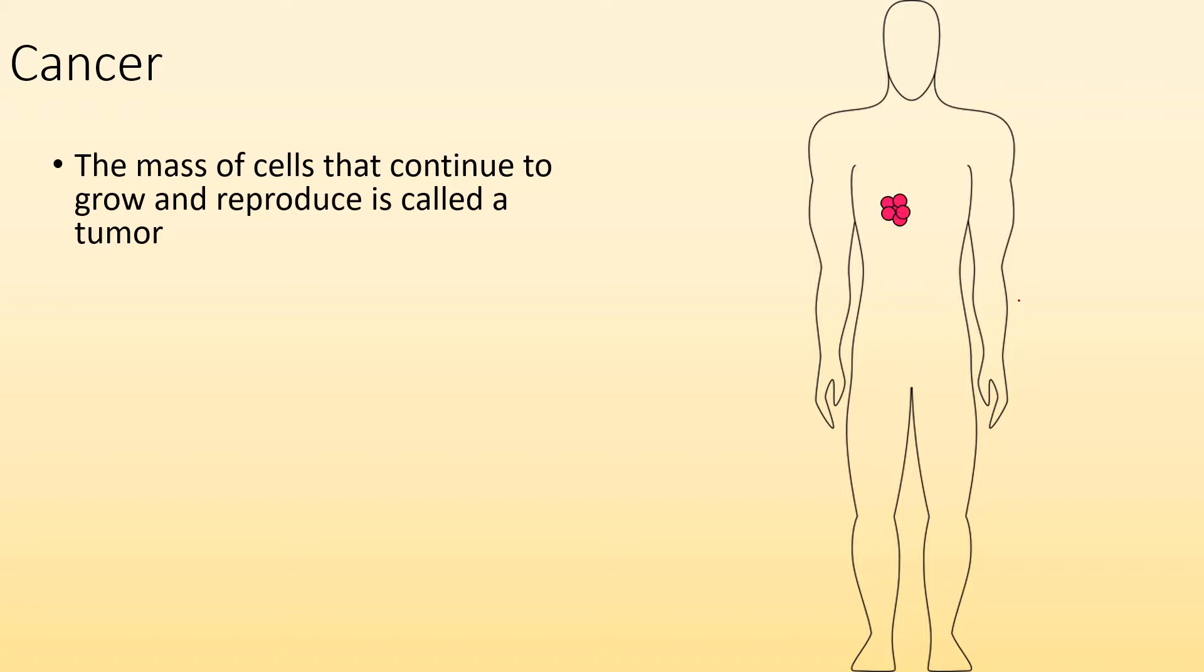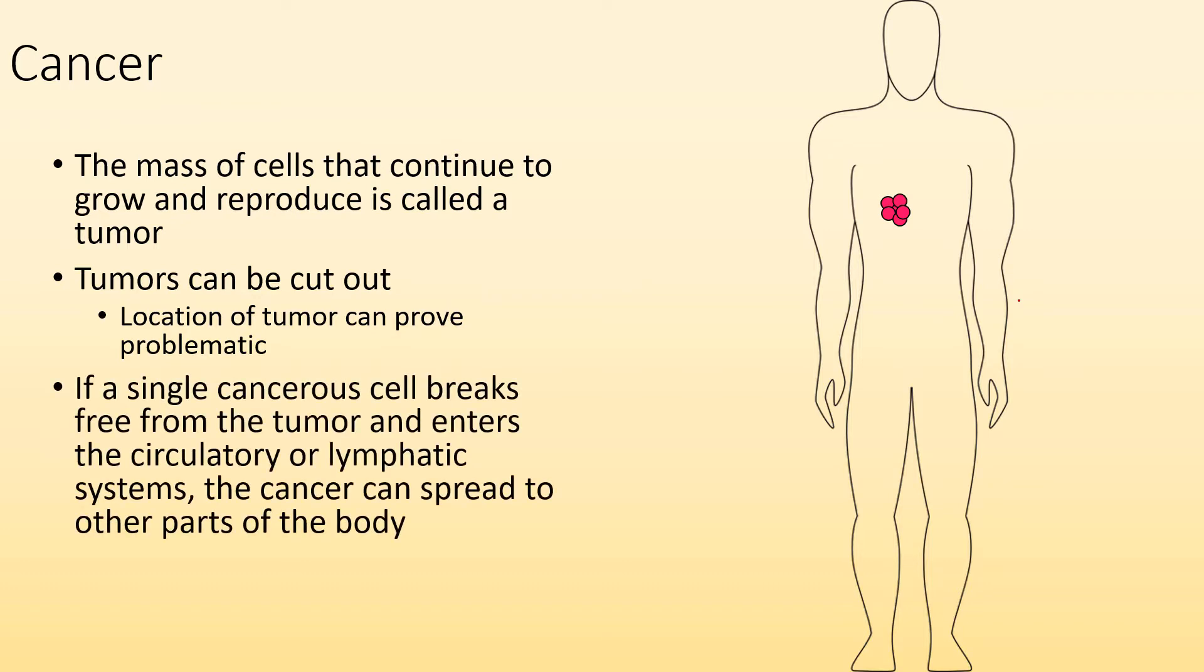So let's say we had a tumor forming here. Tumors can be cut out. That's one treatment. If you have a cancerous tumor, you can cut it out and then it's gone. But that can be problematic depending on where the tumor is. If it's somewhere that's easily accessible, surgery may not be as complicated as if it was, let's say, like a brain tumor or something where we got a lot of important stuff surrounding it. It's going to be problematic to just remove it. Also, what's a problem is if a single cancer cell breaks free from the tumor and then enters the circulatory system or the lymphatic system, it can spread to other parts of the body, which is a real problem. If one of those cells breaks off and travels through the body, it's going to end up in a new place and continue to grow and reproduce uncontrolled. This process is known as metastasis. And once cancer does this, it becomes a really tough battle to win.